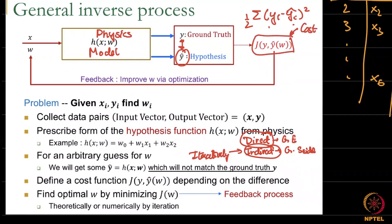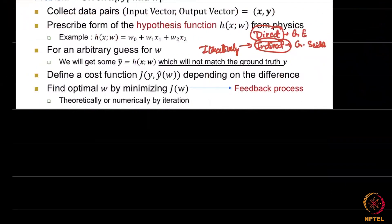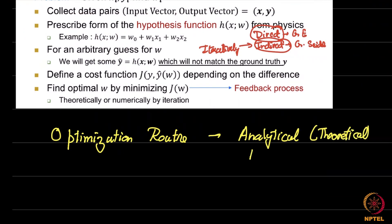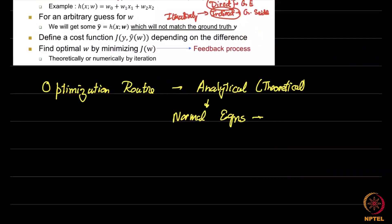If this difference is too high, you improve — you go back and improve w by some optimization method. This requires an optimization routine. What we did in previous weeks was that our optimization routine was essentially analytical — we did a theoretical calculation and came up with the normal equations.